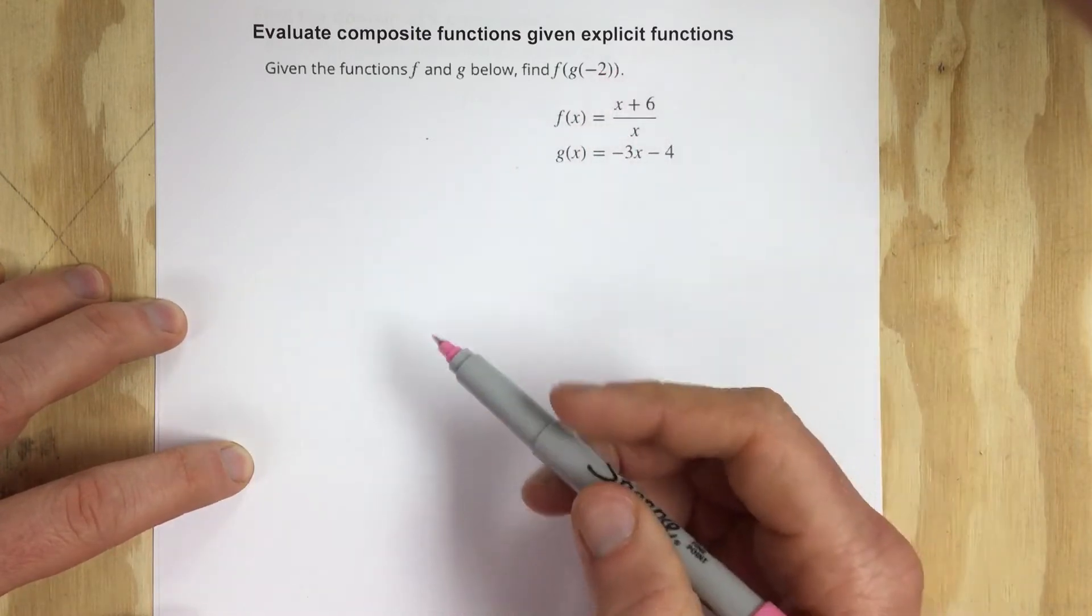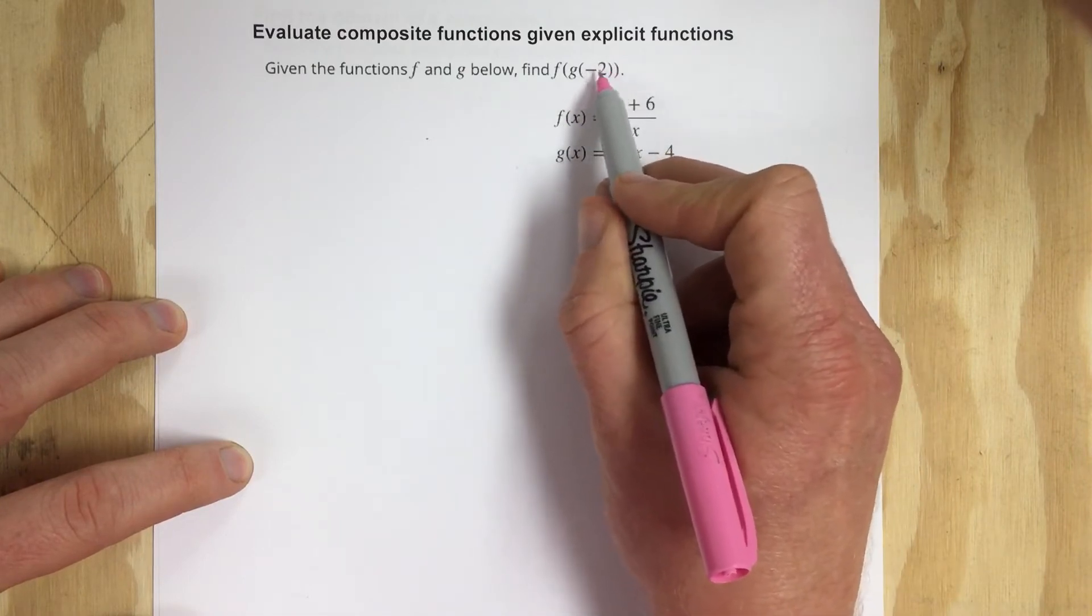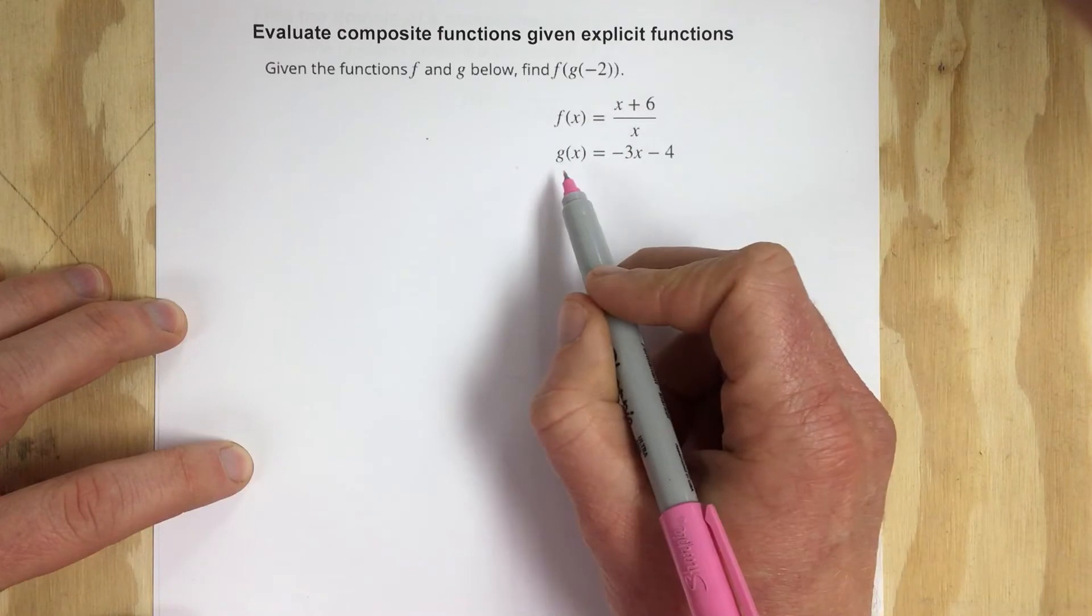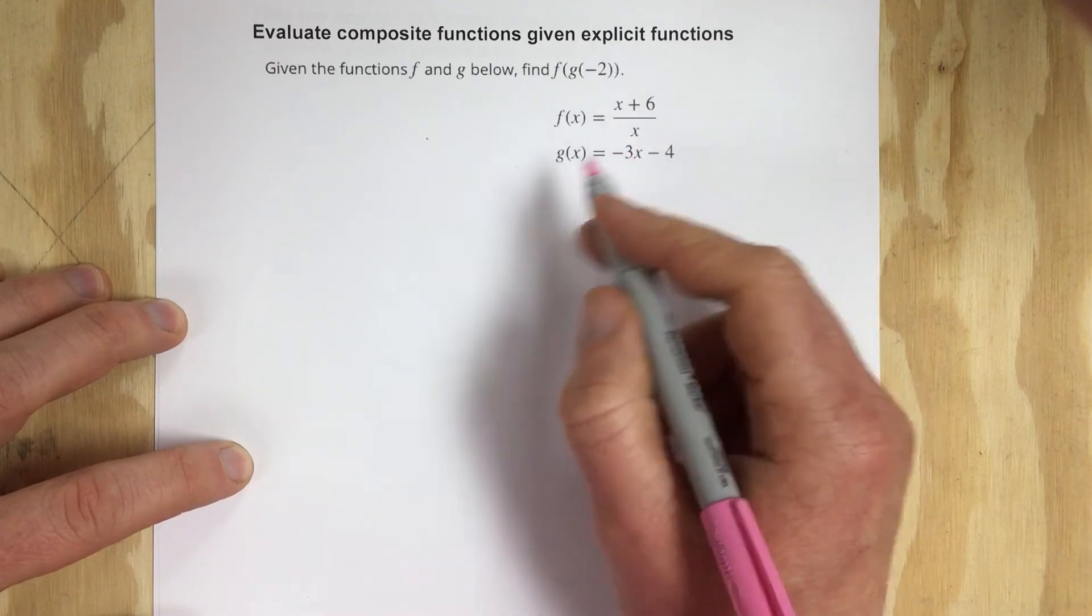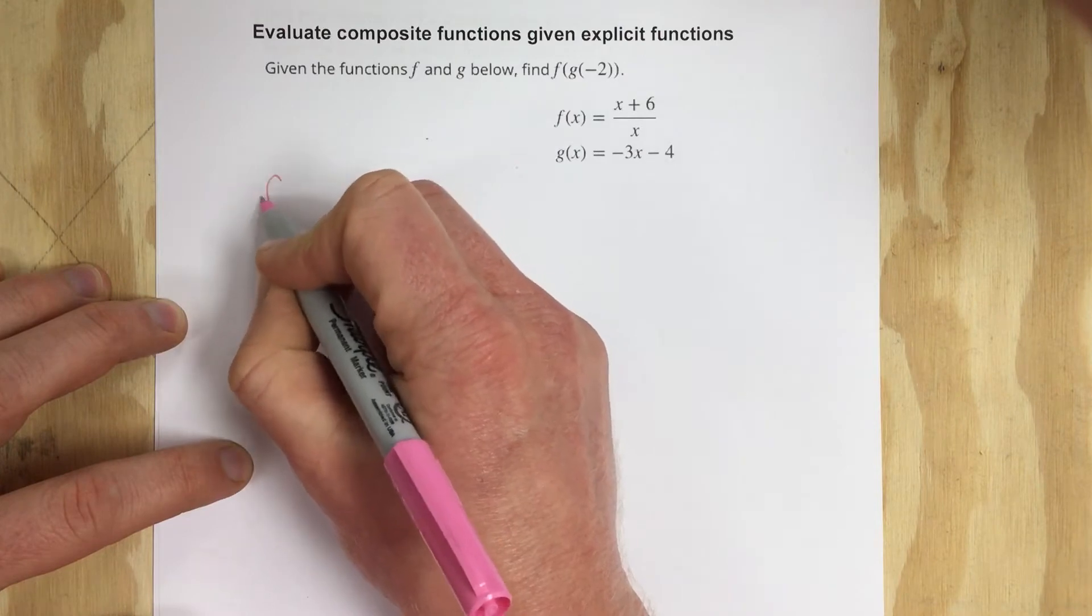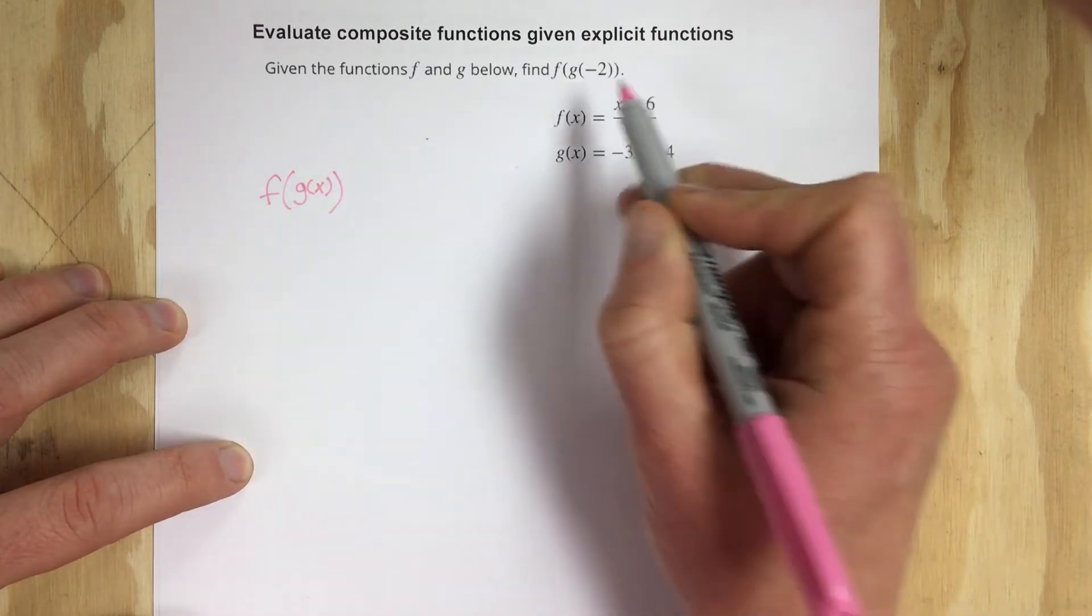But before I do that, personally I like to replace the negative 2 with an x and then do the composition of functions with the general equations. So I'm going to say that this is really just f of g of x instead of f of g of negative 2.